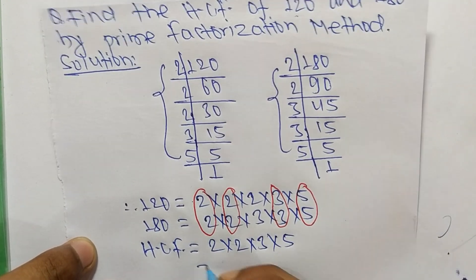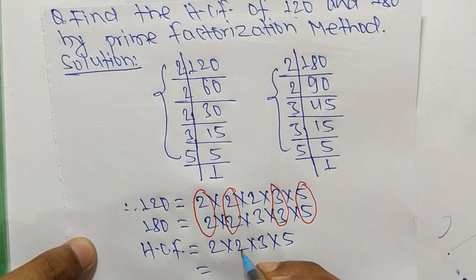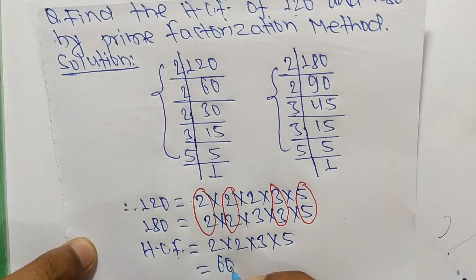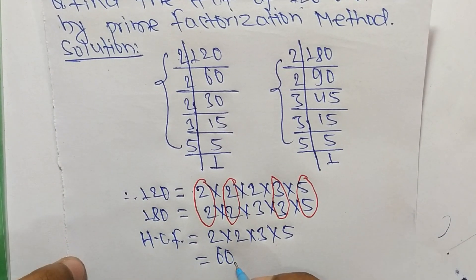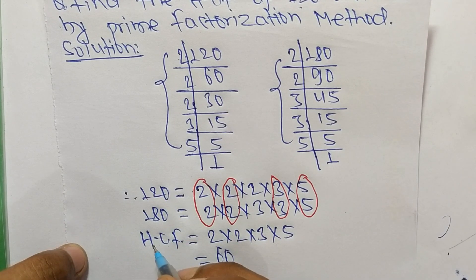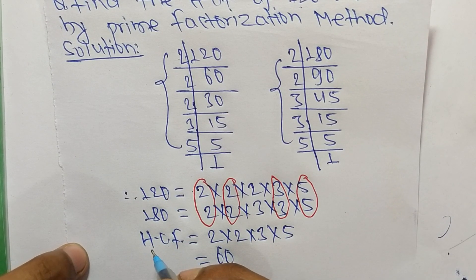So it is 2 times 2 equals 4, 4 times 3 equals 12, and 12 times 5 equals 60. So 60 is the HCF of 120 and 180. So this much for today and thanks for watching.